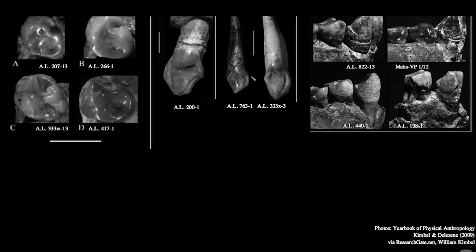Here are mandibular canines from both Hadar and the site of Maka, also from Ethiopia. You can see typical morphology: cusps that have been apically worn, in many cases worn quite flat, and some degree of a distal step down before reaching the premolars. The images have been scaled to the same size, but there is actually quite a bit of variability in overall size. Importantly, as an early hominin, there is no evidence of any kind of honing complex. The first premolar, the P3, shows nothing like the morphology seen in P3s in apes.